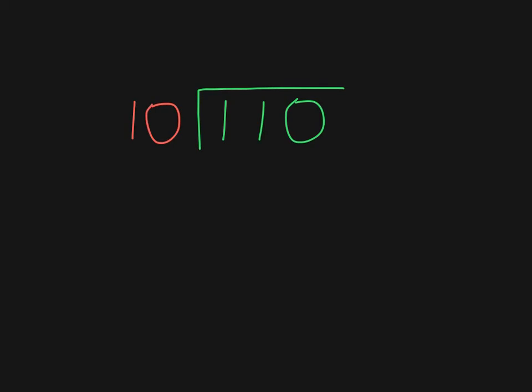So, just as in normal division, you start by taking this and dividing it into the first digit. Well, this is bigger than this, right? So we can't do it. We then take the first two, and we say, how many of those go into this? Well, I can see, and if I sketch it out over here, hopefully you'll see it as well, that 10 plus 1 equals 11.